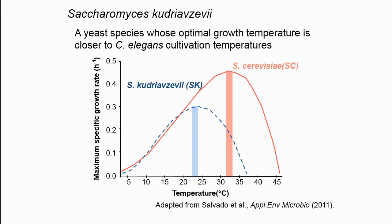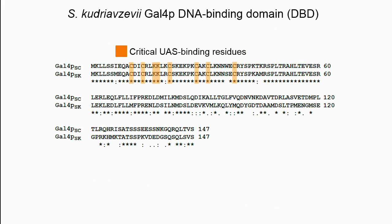We also thought temperature might be a factor, because the original GAL4 gene comes from S. cerevisiae, brewer's yeast, whose optimal growth temperature is 30 to 32 degrees — pretty far from the 20 degrees we cultivate C. elegans at. So we thought if we could find a yeast with a GAL4 gene whose optimal growth temperature was closer to C. elegans', it might function better. We found one: Saccharomyces kujyevzevi, chosen partly because its optimal growth temperature is about 23 to 24 degrees, very close to C. elegans.